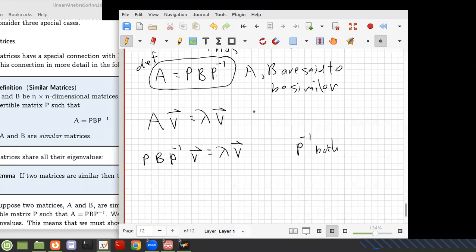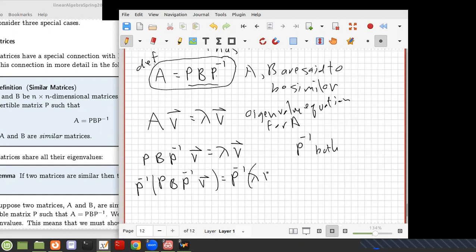Well, here's the eigenvalue equation for A. And then if we substitute the right-hand side here for A, we get this form, and we're going to multiply both sides of this equation by P inverse. So that's going to be P inverse times PV equals P inverse times lambda V. Well, on the right-hand side, the number lambda just comes through, that's going to be lambda times P inverse V.